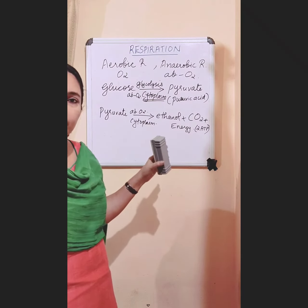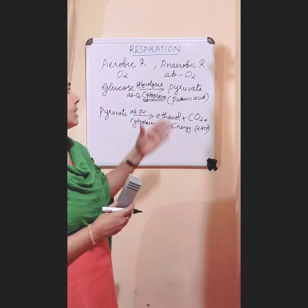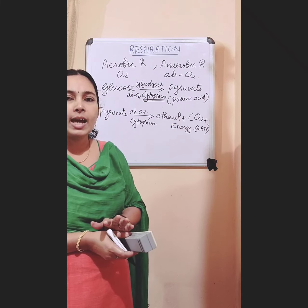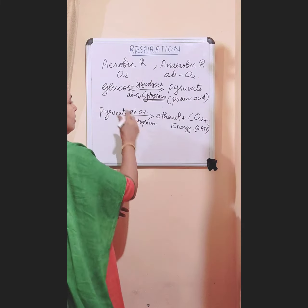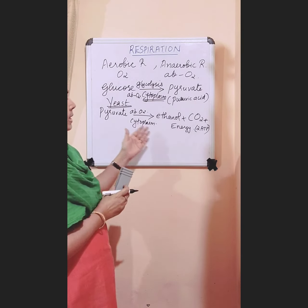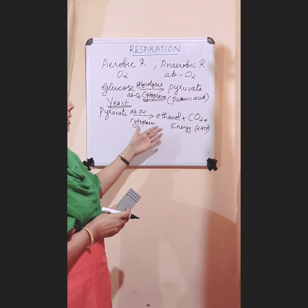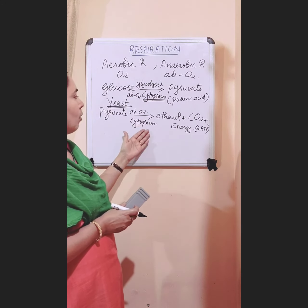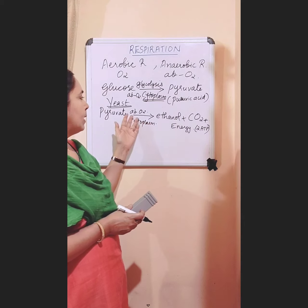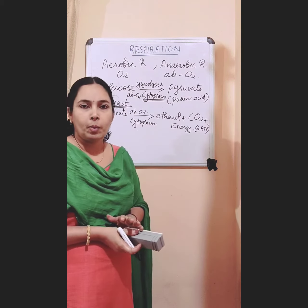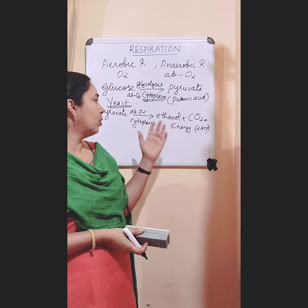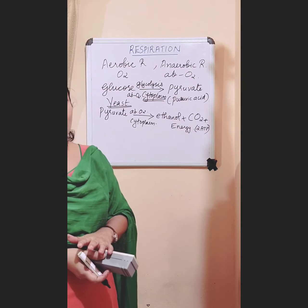The second step is also taking place in the cytoplasm. We can see this anaerobic respiration in some unicellular organisms like yeast and some bacteria. In yeast, during anaerobic respiration, pyruvate is broken down to ethanol, carbon dioxide, and energy in the absence of oxygen in the cytoplasm. So these organisms like yeast and some bacteria don't need oxygen for respiration — they can live without oxygen.